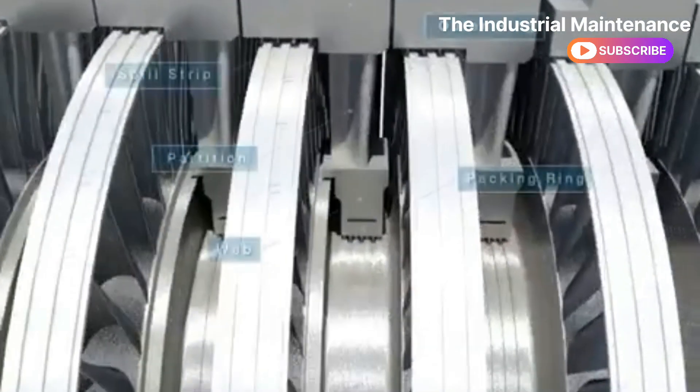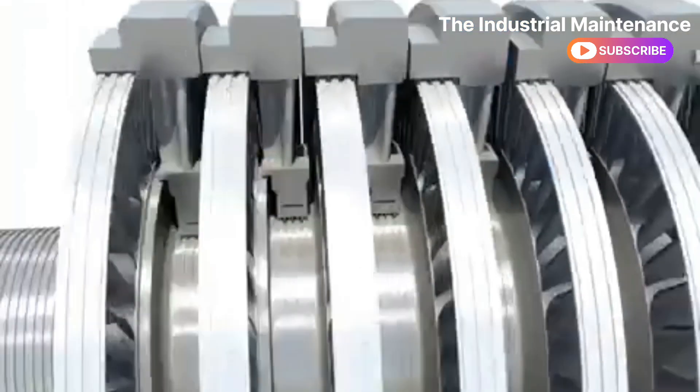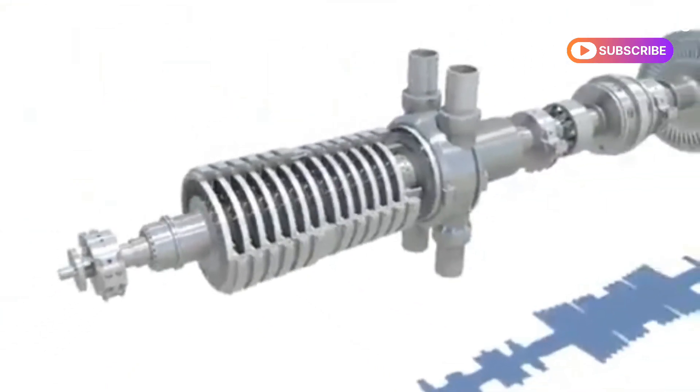The spill strip reduces leakage steam between the rear of the bucket and diaphragm, and the packing ring reduces the leakage steam between the rotor and diaphragm.